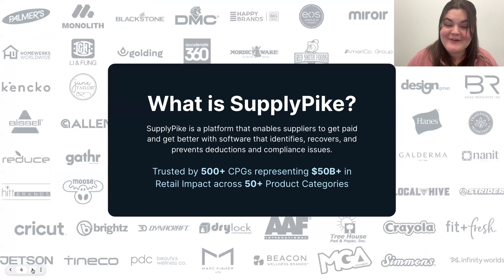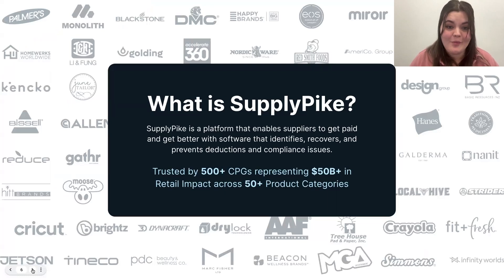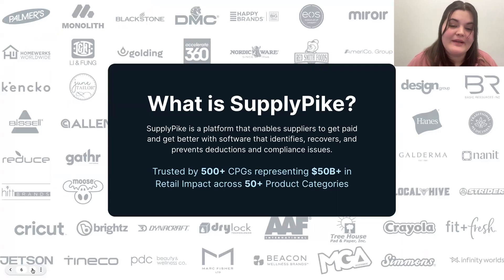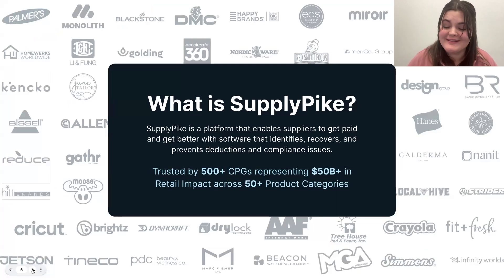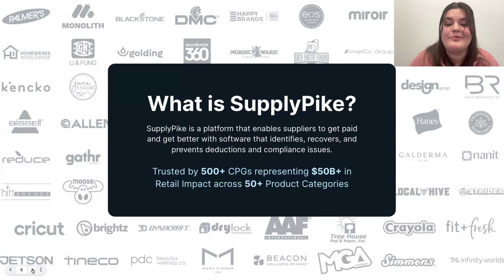SupplyPike is a platform designed to help suppliers get paid and get better. We do this with software that identifies, recovers, and prevents deductions and compliance issues. We work with multiple different retailers like Amazon, Target, Home Depot, Kroger, and Walmart. Some things we cover at Walmart include AP deductions, OTIF, SQIP, and overages — anything that could be impacting your bottom line. We have built these tools to help target and resolve those revenue loss issues, and we work with a lot of great suppliers.